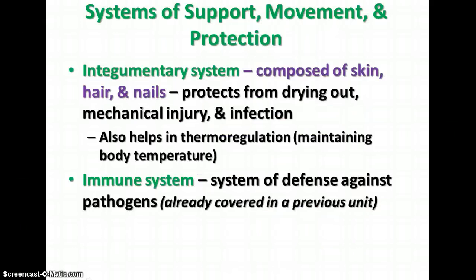The next system, covering protection as well as support, is the integumentary system, composed of the skin, hair, and nails. The main function is to keep the body from drying out, and it also helps prevent mechanical injury and infection. Another important function is thermoregulation — maintaining body temperature. If we get too hot, we sweat, and sweat glands are found in the skin. Or we shiver, and the muscles that allow us to shiver are also found in the skin.